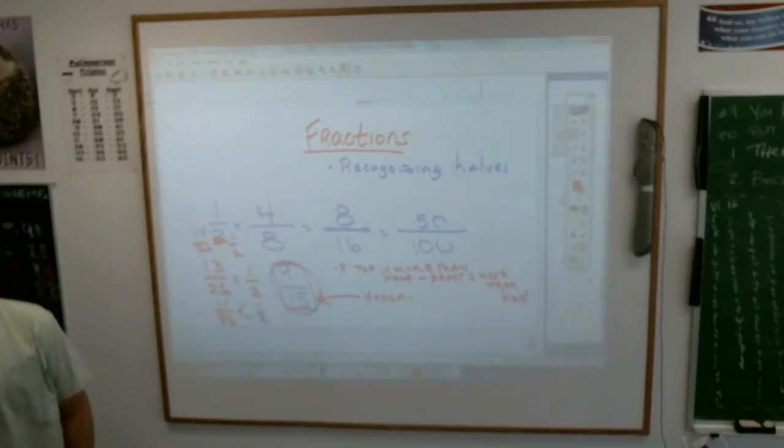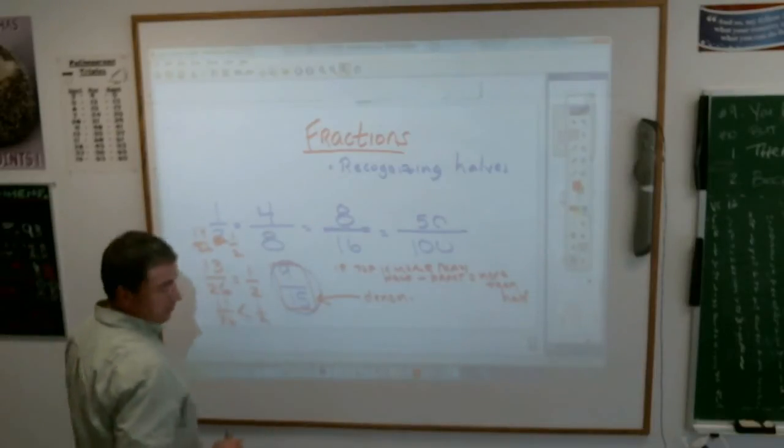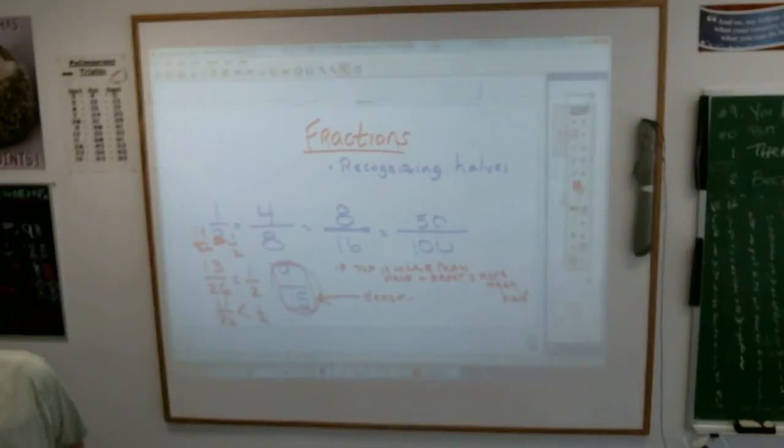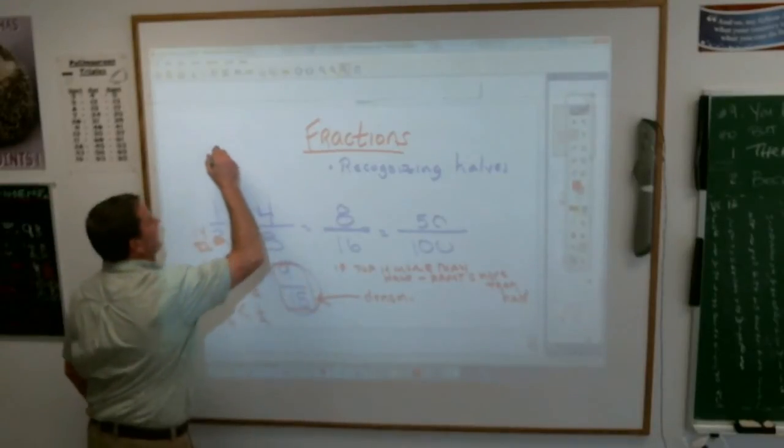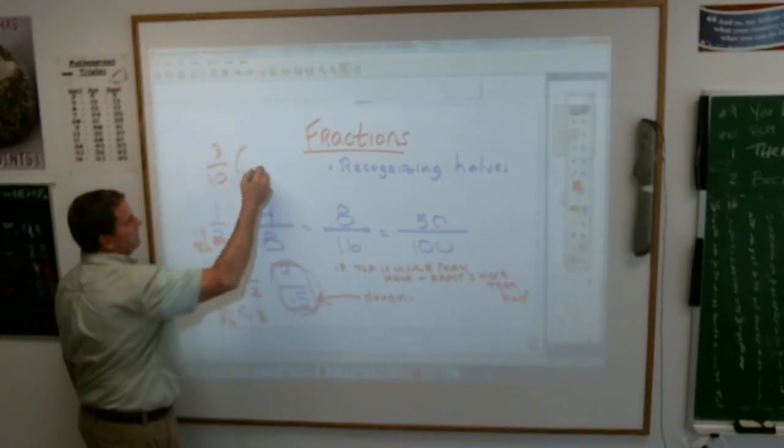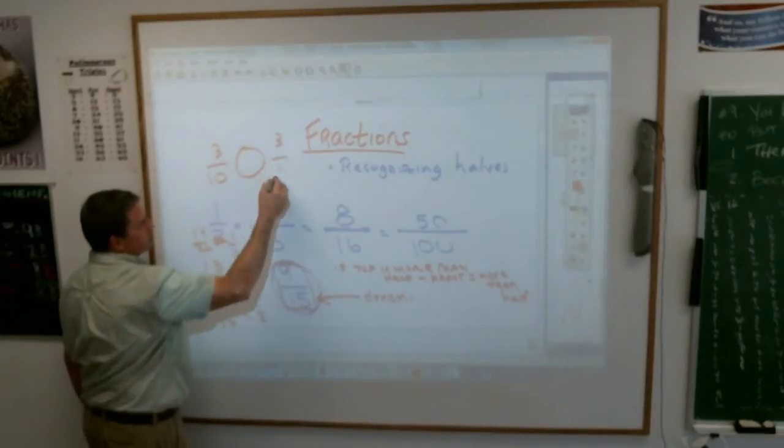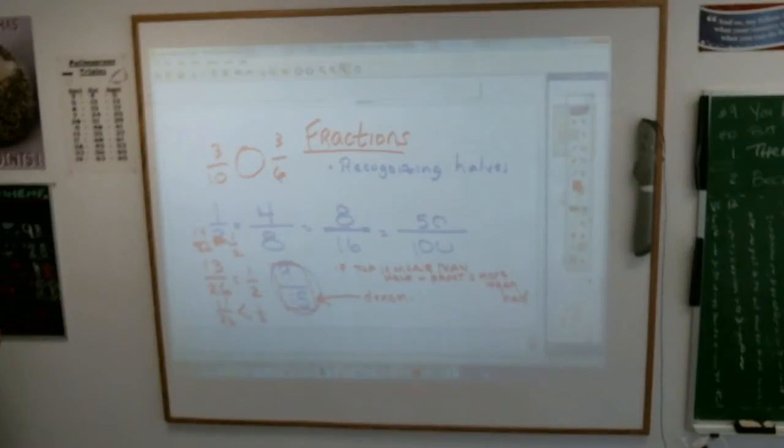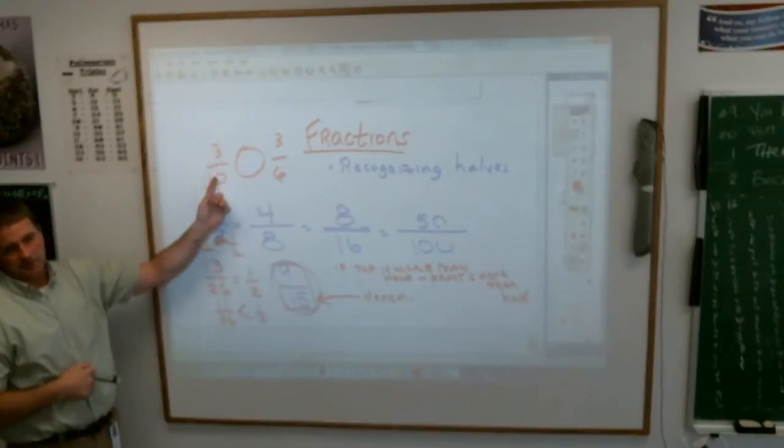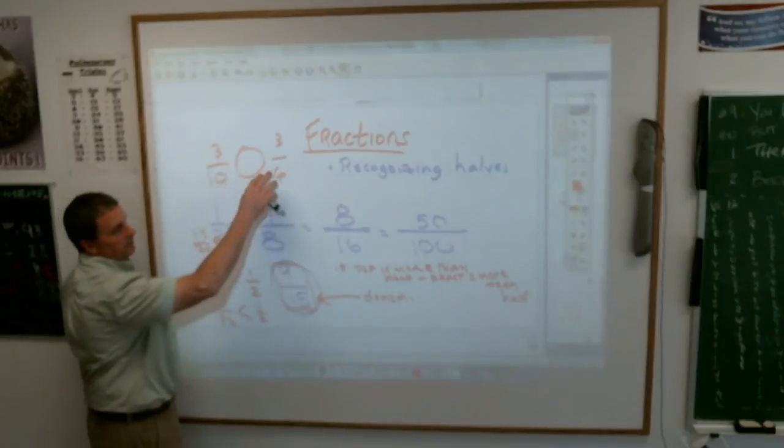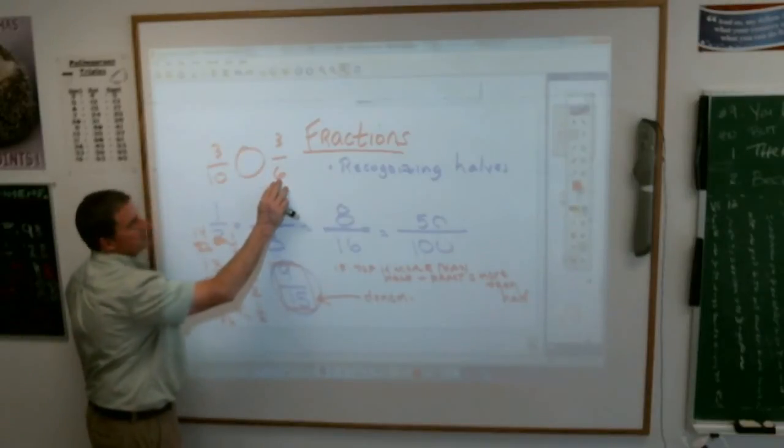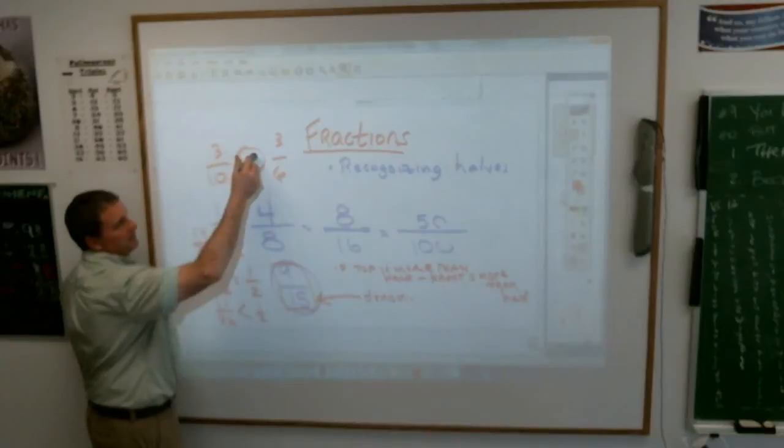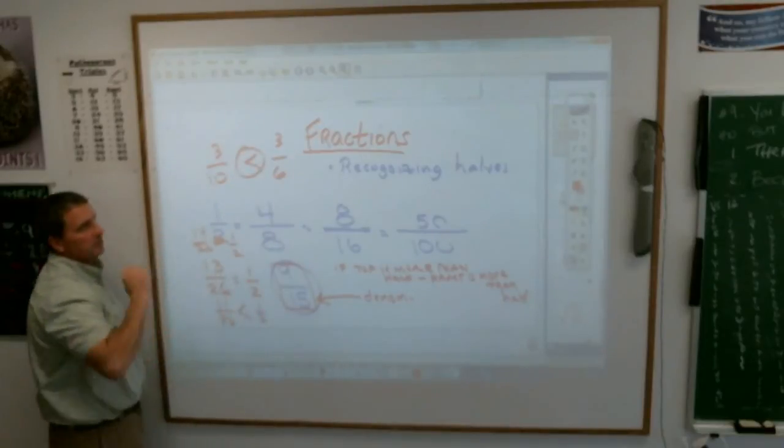So looking at some of the problems that they gave me in the book, you skipped problem number six. Three-tenths or three-sixths. Three-tenths compared to three-sixths. In order to compare those, one of the quick ways to do it is look at how they compare to a half. Well, three-tenths is less than a half. This is smaller than a half. Three-sixths is a half. So half would have to be bigger than something that's less than half.